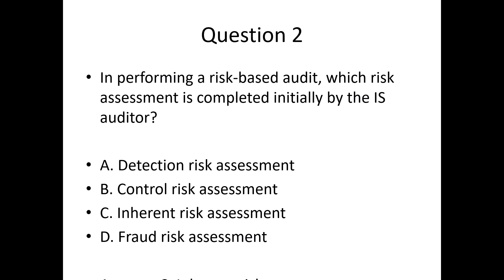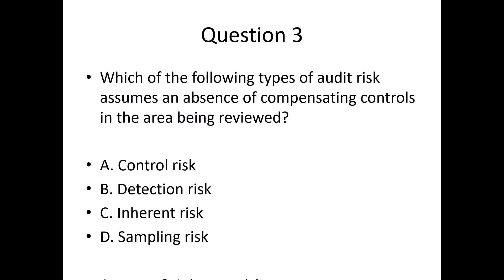Question 3. Which of the following types of audit risk assumes an absence of compensating controls in the area being reviewed? A. Control risk. B. Detection risk. C. Inherent risk. D. Sampling risk.